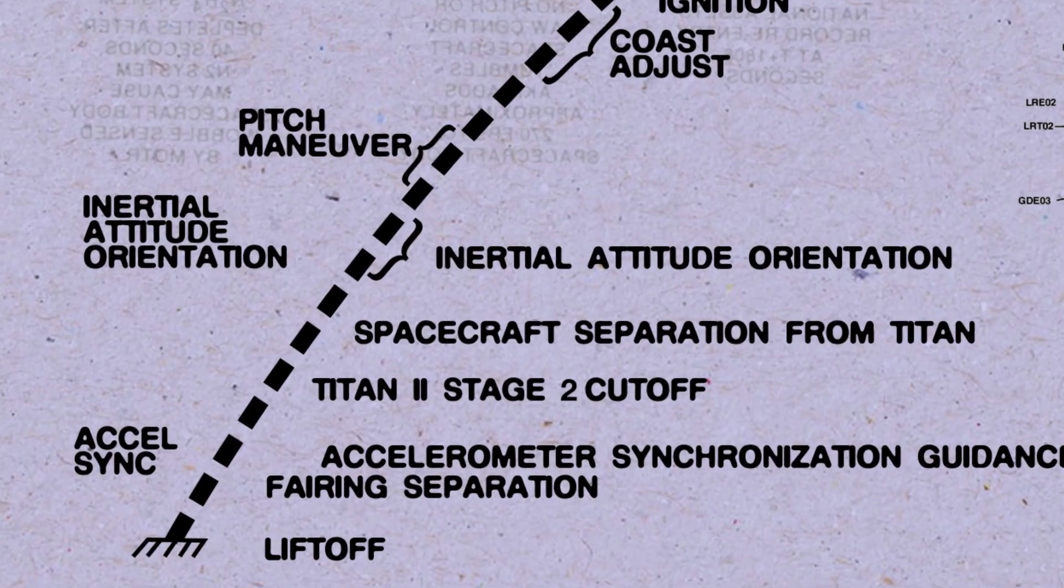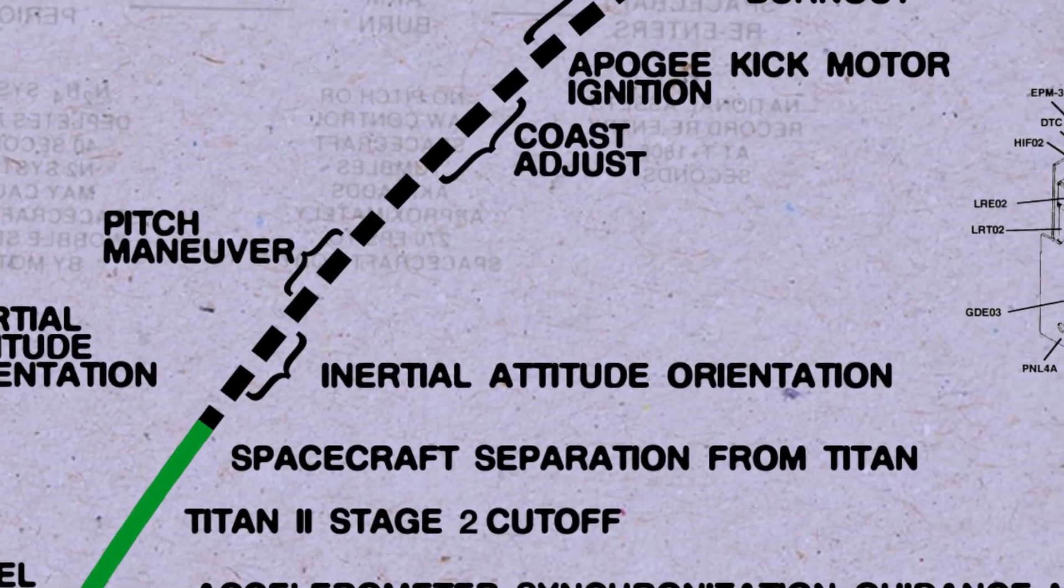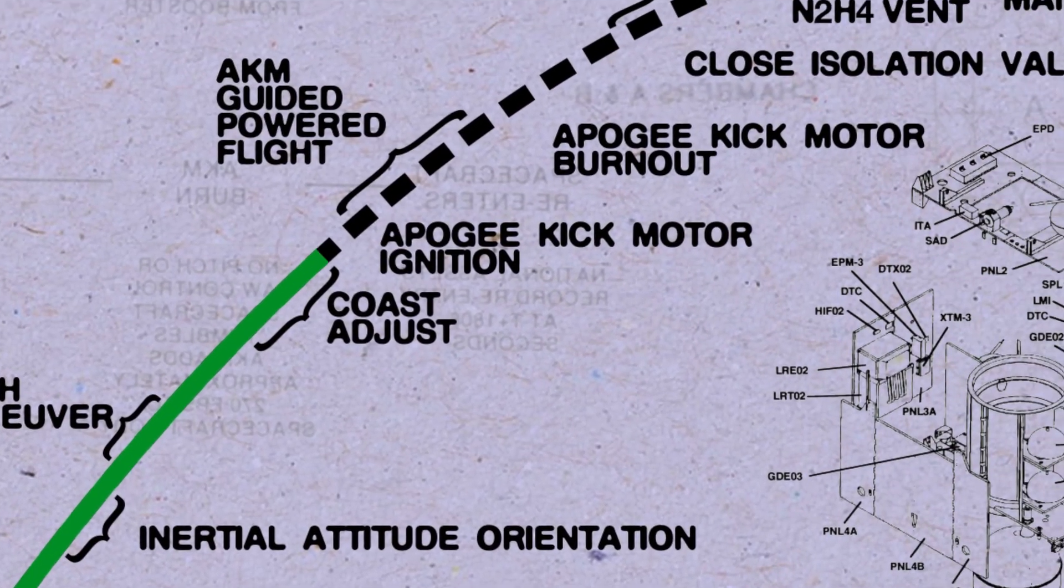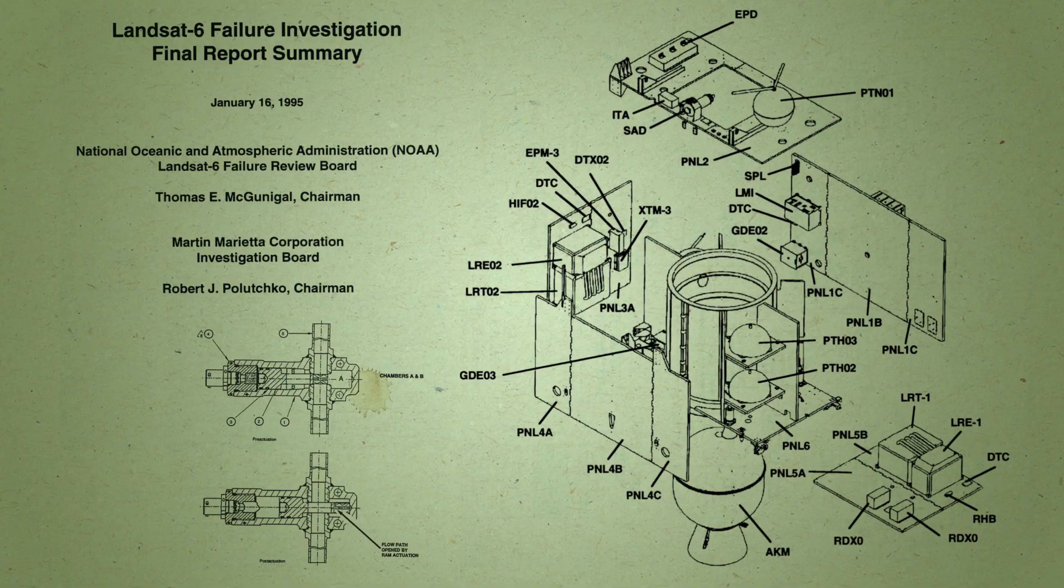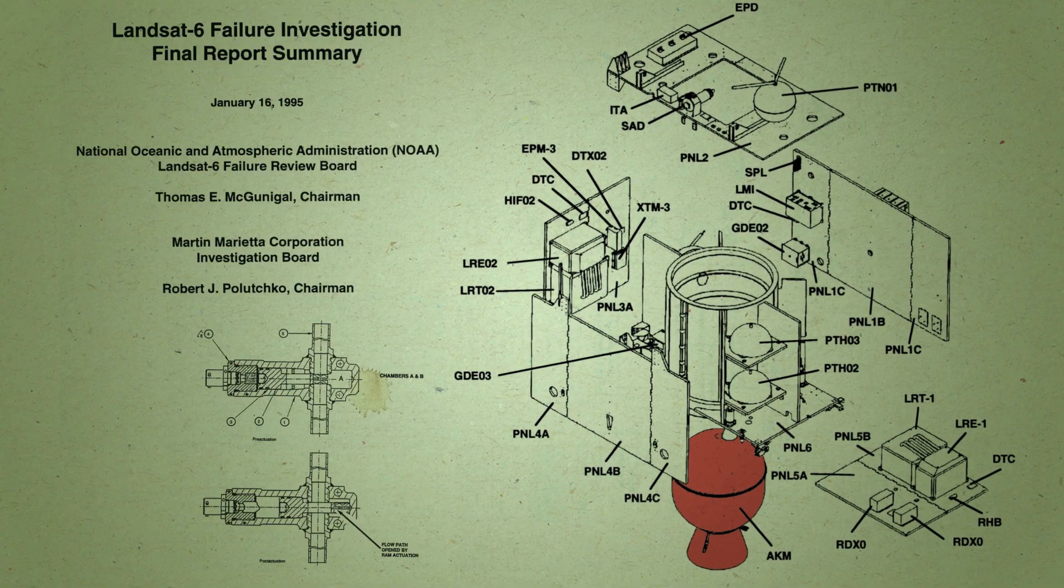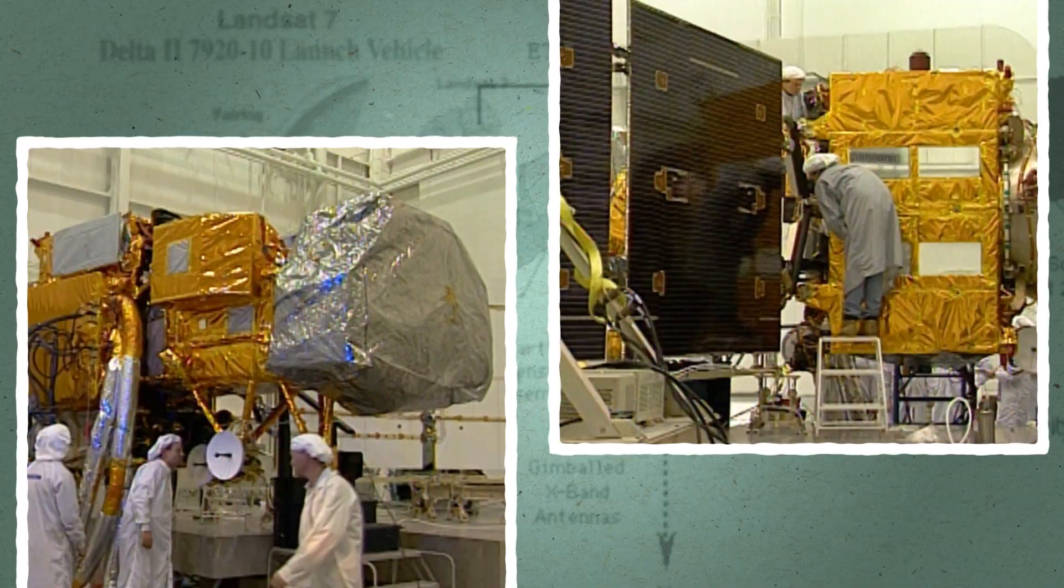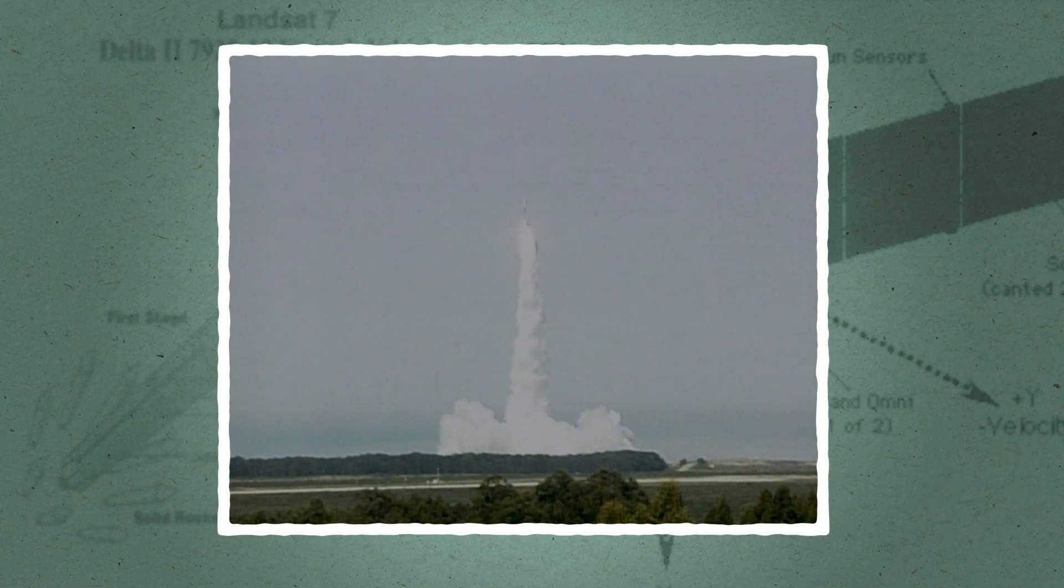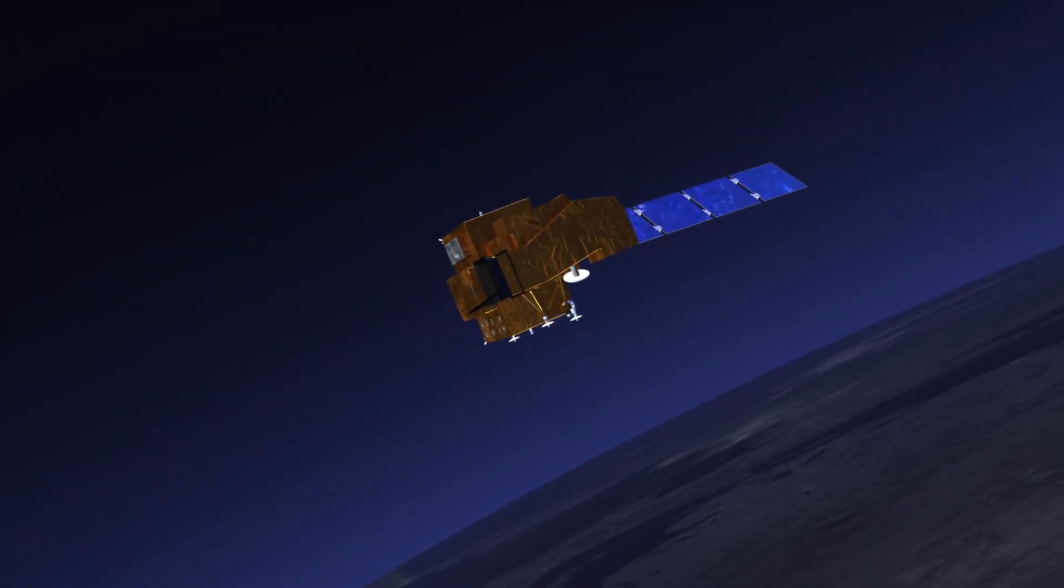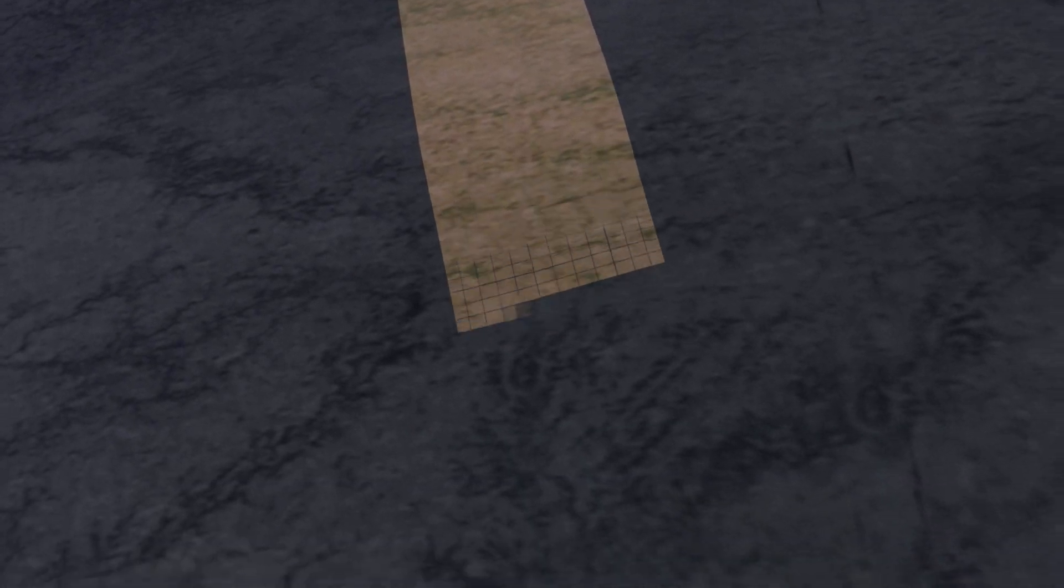NASA's team of scientists and engineers got to work immediately to figure out what went wrong. Turns out it was a rupture in the rocket fuel chamber. They used failure as an opportunity to learn. Six years later, the team launched Landsat 7, one of the most technologically advanced Earth-observing satellites of its generation, still in use today.